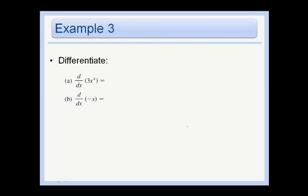So in these examples, we can say that this is the same thing as 3 times the derivative of x to the 4th, which is the same thing as 3 times 4x cubed, which is just 12x cubed.